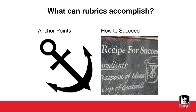What can rubrics accomplish? Rubrics can help us set anchor points along a quality continuum so that we can set reasonable and appropriate expectations for students and consistently judge how well those expectations are met. It's a help for our students, but also for us so that we can remain consistent in our grading. Rubrics also divide an assignment into its component parts and help provide a detailed description of what constitutes acceptable and unacceptable levels of performance for each criterion.